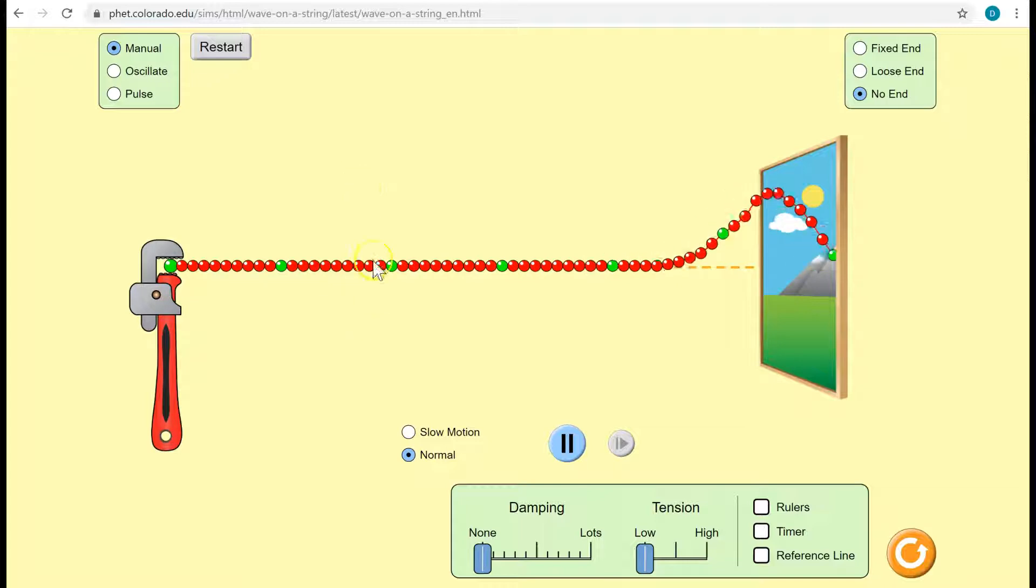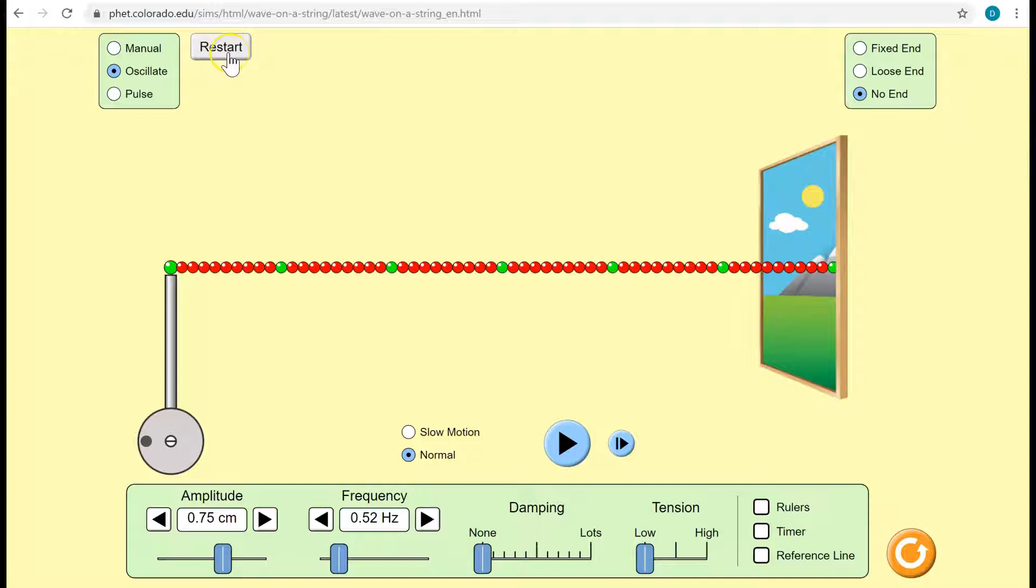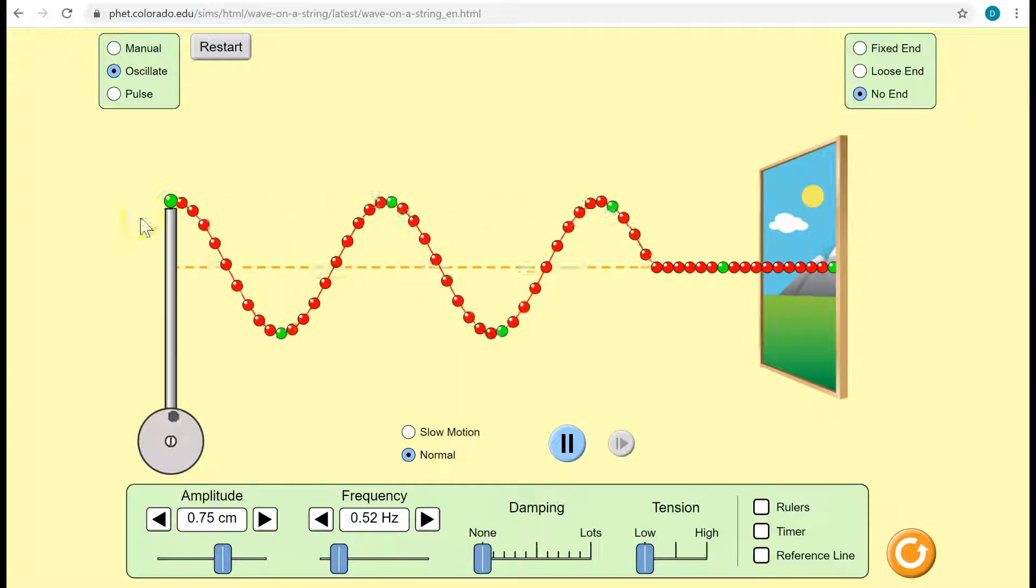Particles only move up and down, they're not moving across the medium. So there's no net displacement of the particles themselves. If we continue and have this process repeat, this upward and downward motion, then now this source is producing a continuous wave.